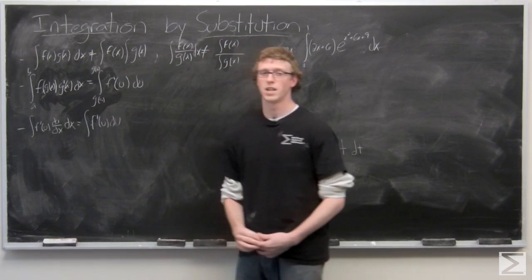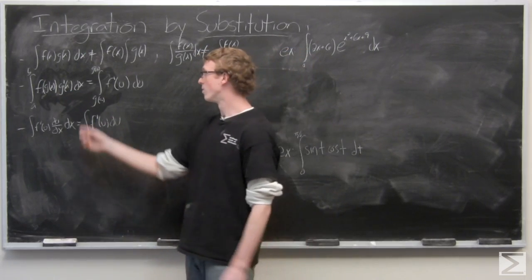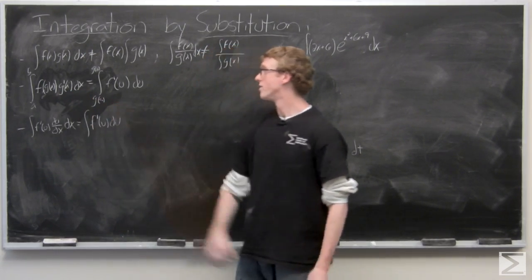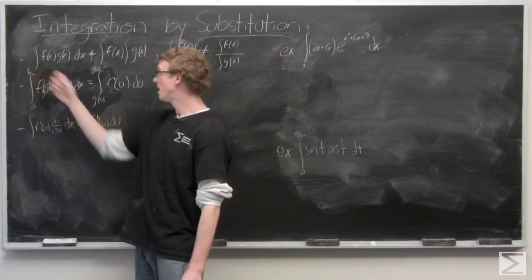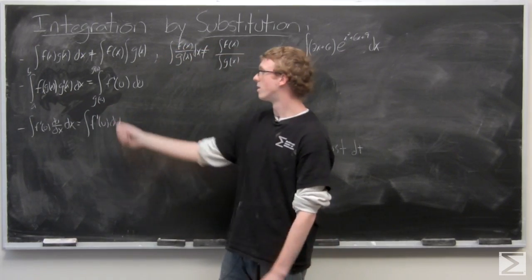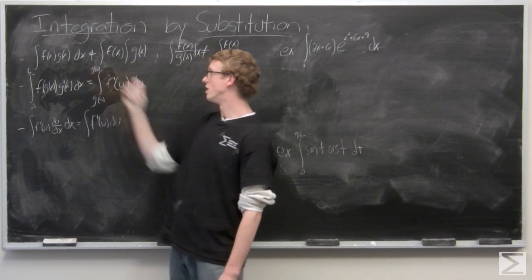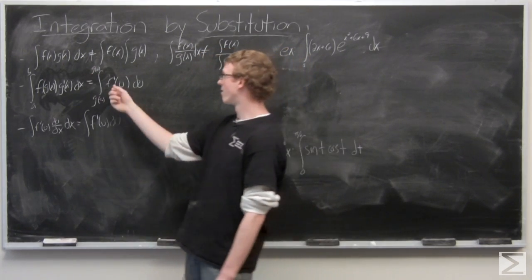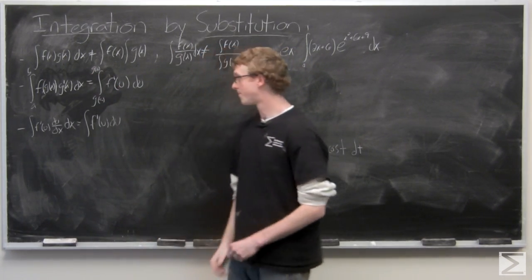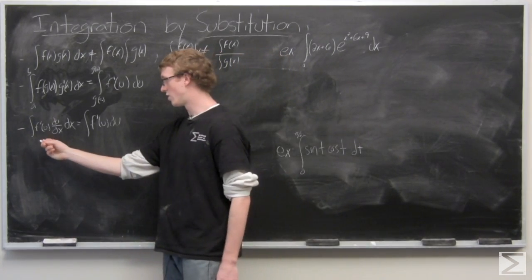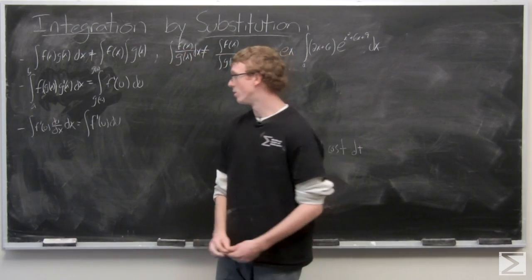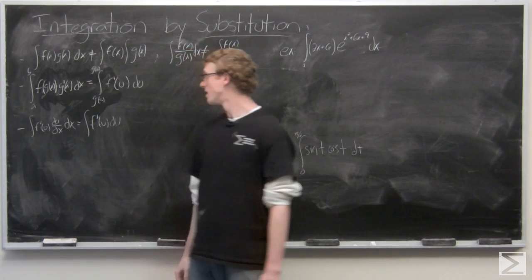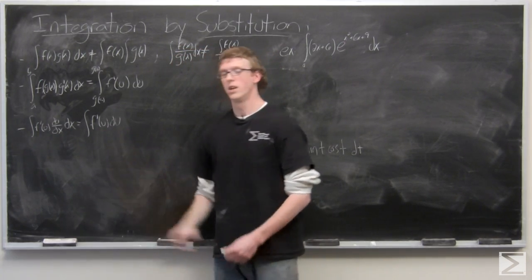So, if we have f of g of x times g prime of x dx, then we can switch this to, and this is from a to b, then we can switch it as the integral from g of a to g of b times f prime of u du. Now, in a different notation, that looks like f prime of u times du over dx dx equals f prime of u du.